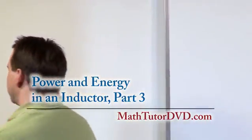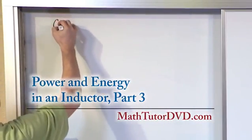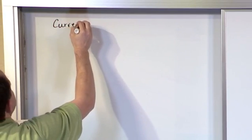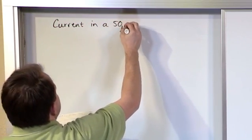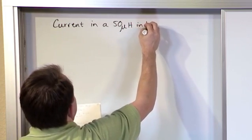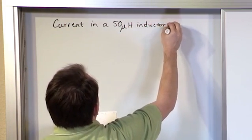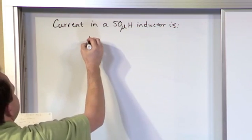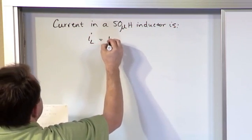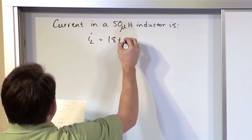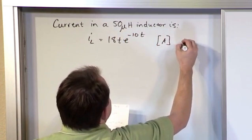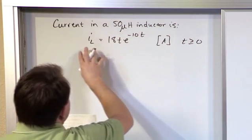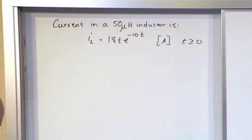So in this particular problem, what we know is the current in a 50 micro Henry inductor is the following. And again, it's going to be one of these crazy looking currents: 18 times t times e to the minus 10 t. Of course, that unit is amps because it's current and that's for t greater than equal to zero. So this is what the current looks like in the inductor.